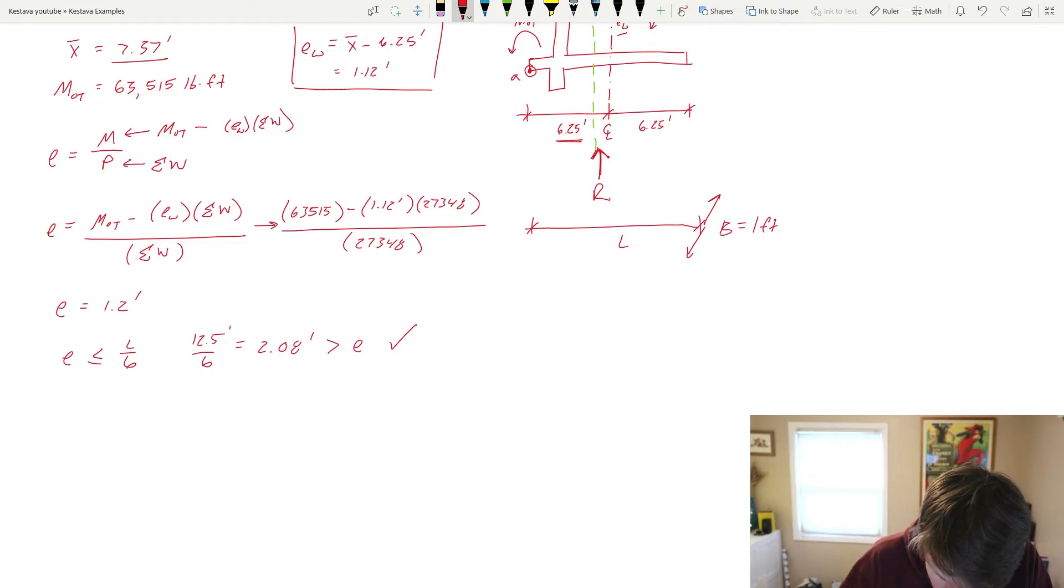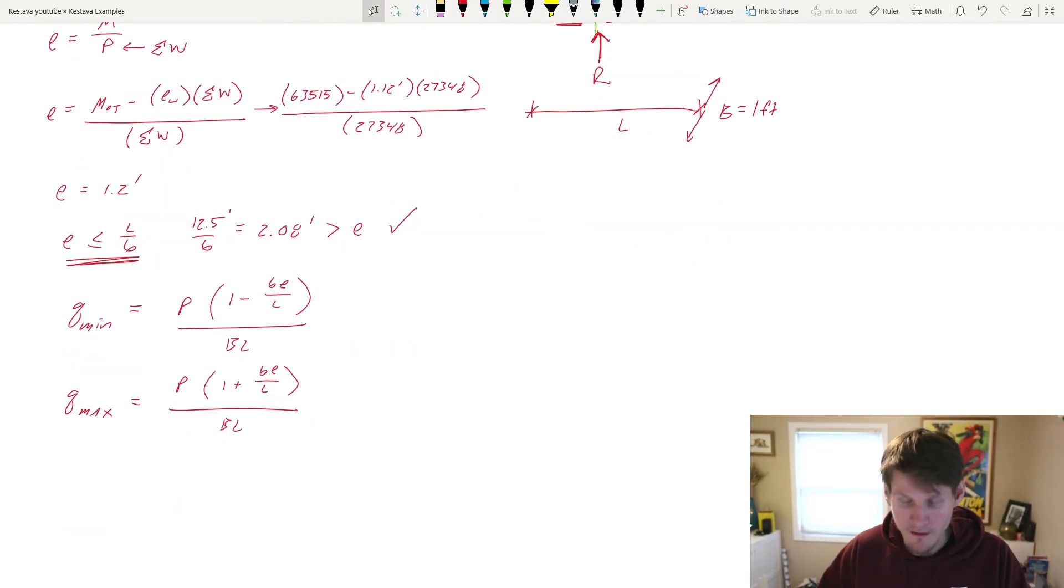So we're good there. So we are in this range, which is actually really nice. And that means that Q min equals the following equation, and Q max is the same equation with a plus. All right, and there we have it.